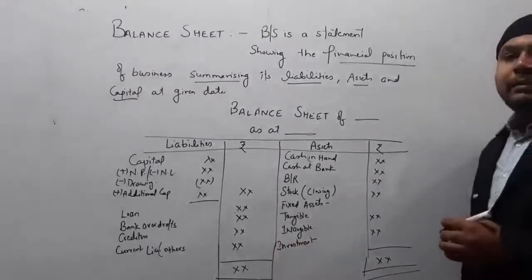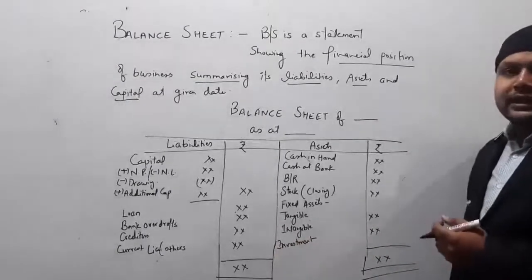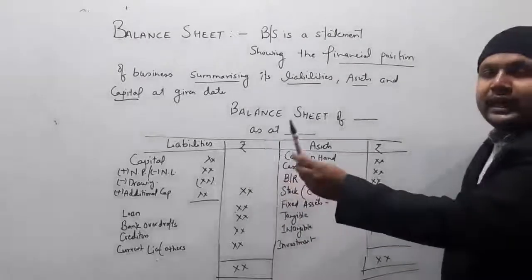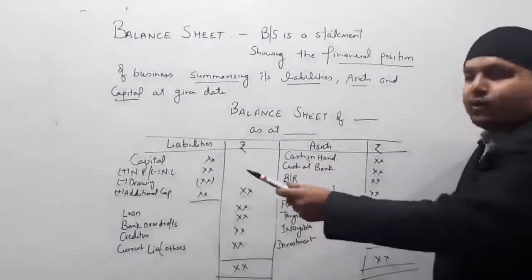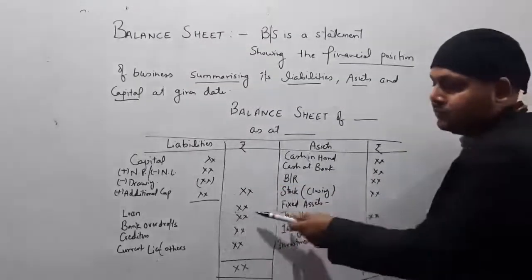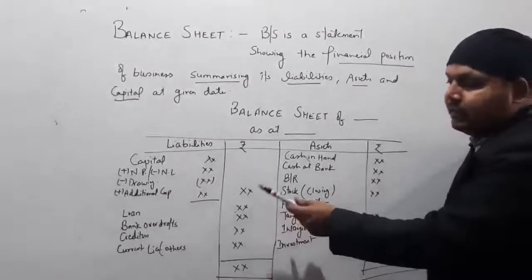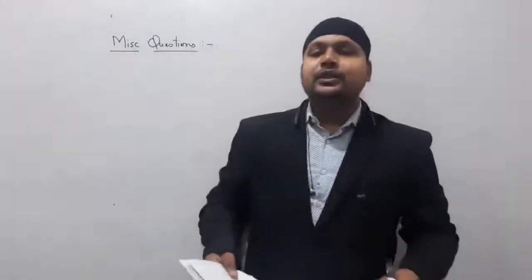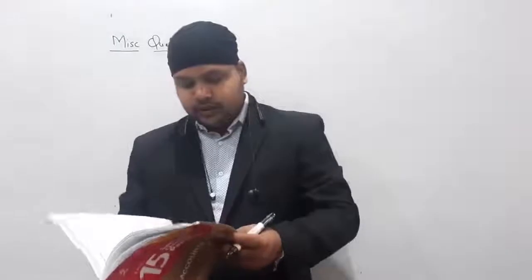This is the format of the balance sheet as you can see on your screen — capital, add net profit or minus net loss, minus drawings, plus additional capital, and then loans are shown on the liability side as a loan taken from a company. Such types of questions are asked in examinations as objective type questions carrying one to two marks.